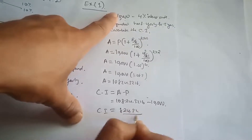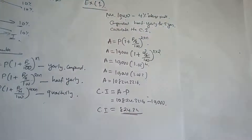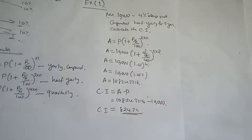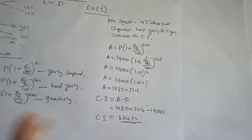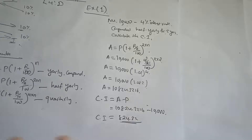So the compound interest is 824.32. Now in the next question, we will find the principal amount using compound interest.